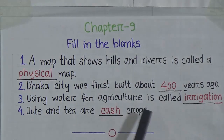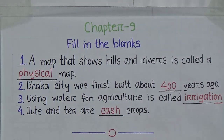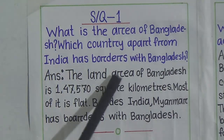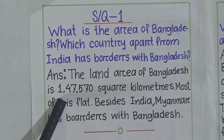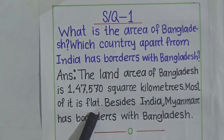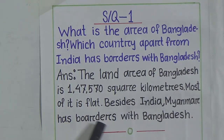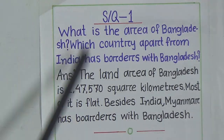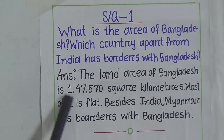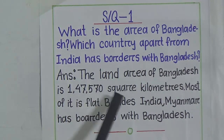Now we will learn short questions 1 and 2. Short question 1: What is the area of Bangladesh? Which country apart from India has borders with Bangladesh? The answer is: the land area of Bangladesh is 147,570 square kilometers. Most of it is flat. Besides India, Myanmar has borders with Bangladesh.